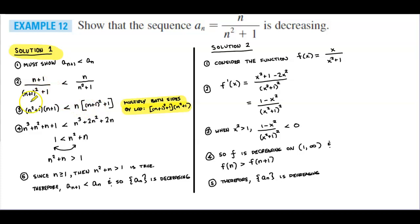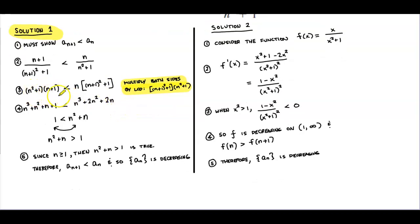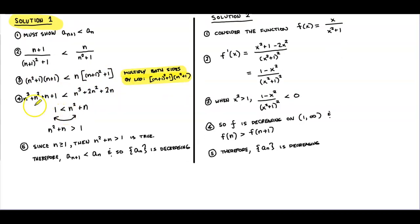After multiplying by the LCD, the left side becomes (n² + 1)(n + 1), which is less than n times ((n+1)² + 1). Then if we FOIL and distribute, the left side becomes n³ + n² + n + 1, which is less than the right side: n³ + 2n² + 2n.